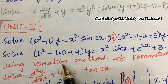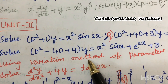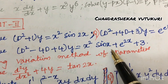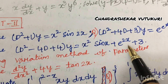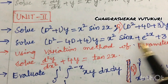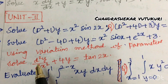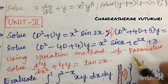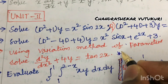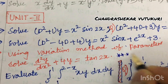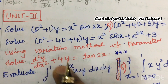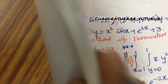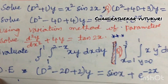Solve (D² - 4D + 4)y = x² sin x + e^(2x) + 3, and using the method of variation of parameters you are going to get one question for sure based on this equation or another equation coming up next.